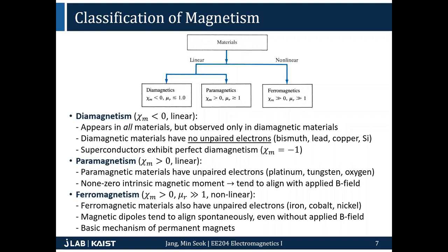We talked about different types of magnetism: diamagnetism, paramagnetism, and ferromagnetism. Diamagnetism occurs for materials with no unpaired electrons. Each orbiting state can hold two electrons — spin up and spin down — as you learned in general chemistry. If there are no unpaired electron spins, the material tends to be diamagnetic. If there are unpaired electron spins, the material tends to be paramagnetic.